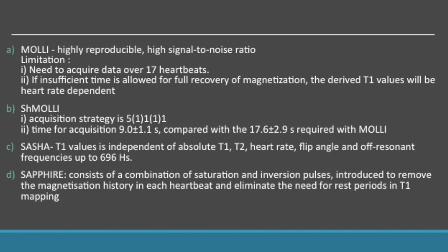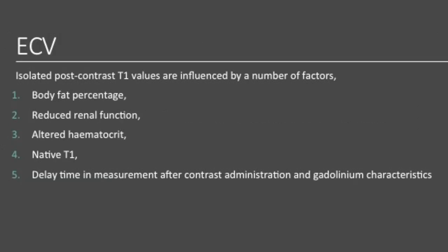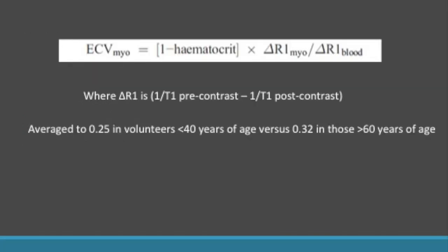ShMOLLI, or shortened MOLLI, reduces the time for acquisition. SASHA and SAPPHIRE are saturation-based recovery sequences. Extracellular volume fraction can be calculated by administering gadolinium and obtaining post-contrast T1 values, but these can be influenced by a number of factors. We optimize for hematocrit values using the extracellular volume estimation formula.